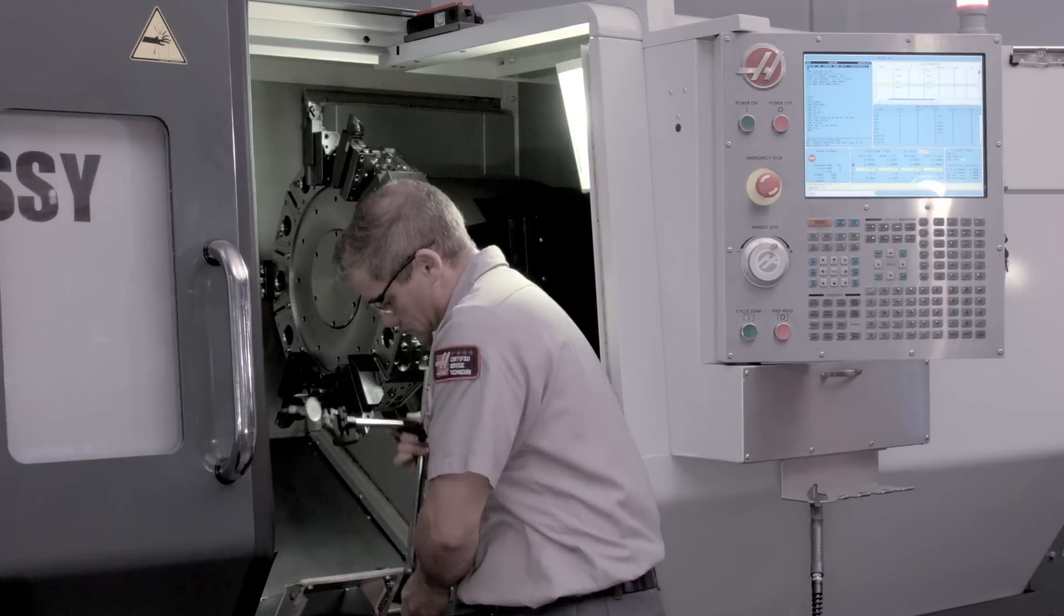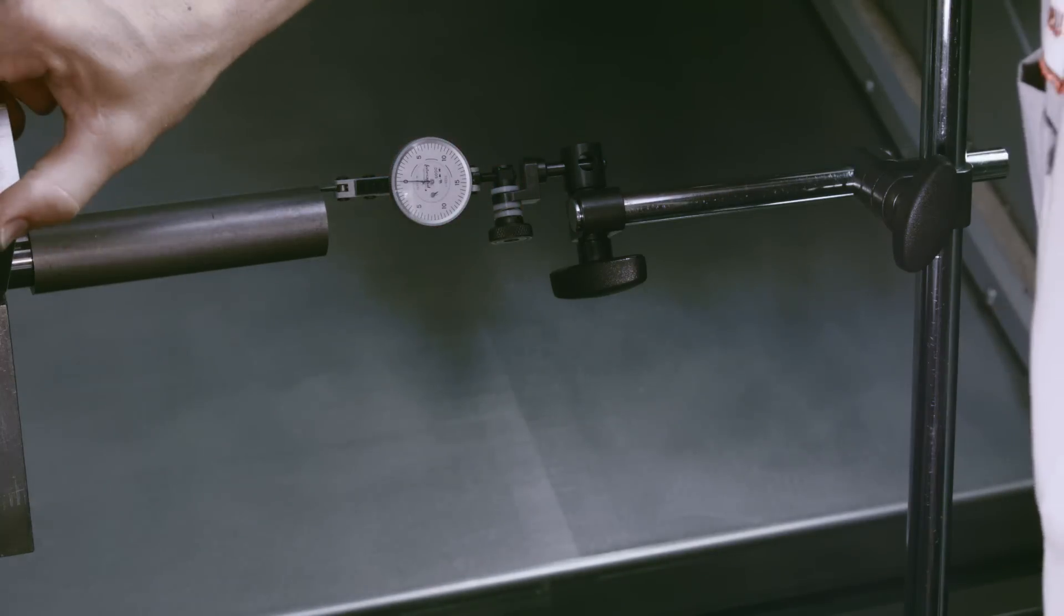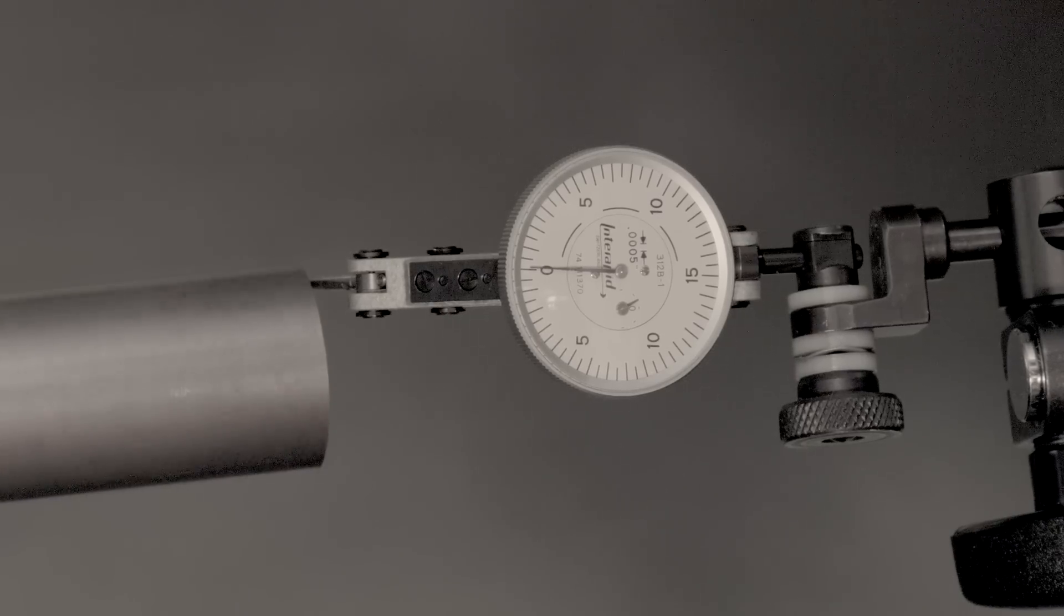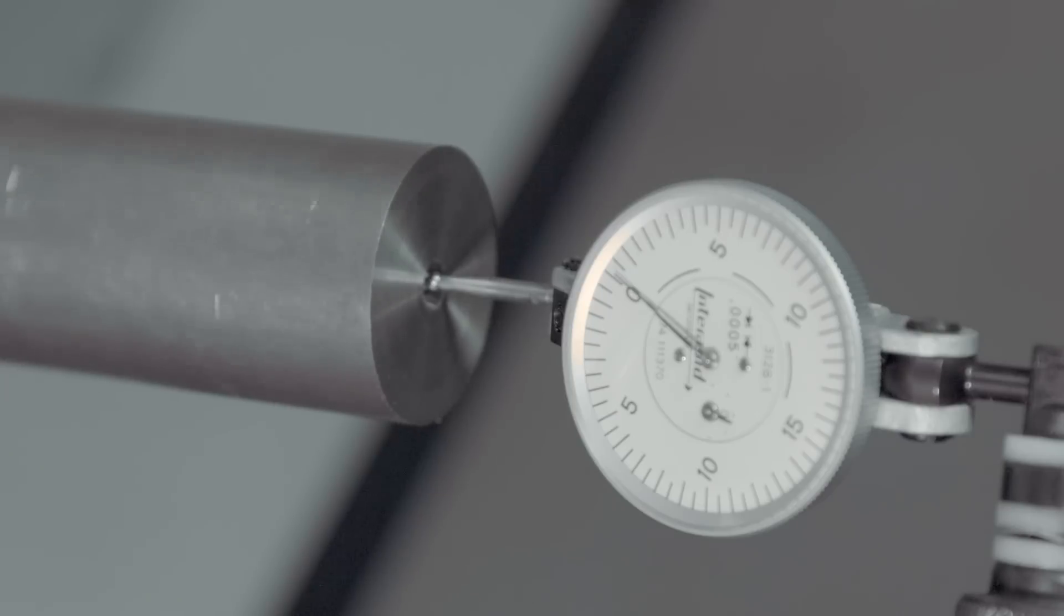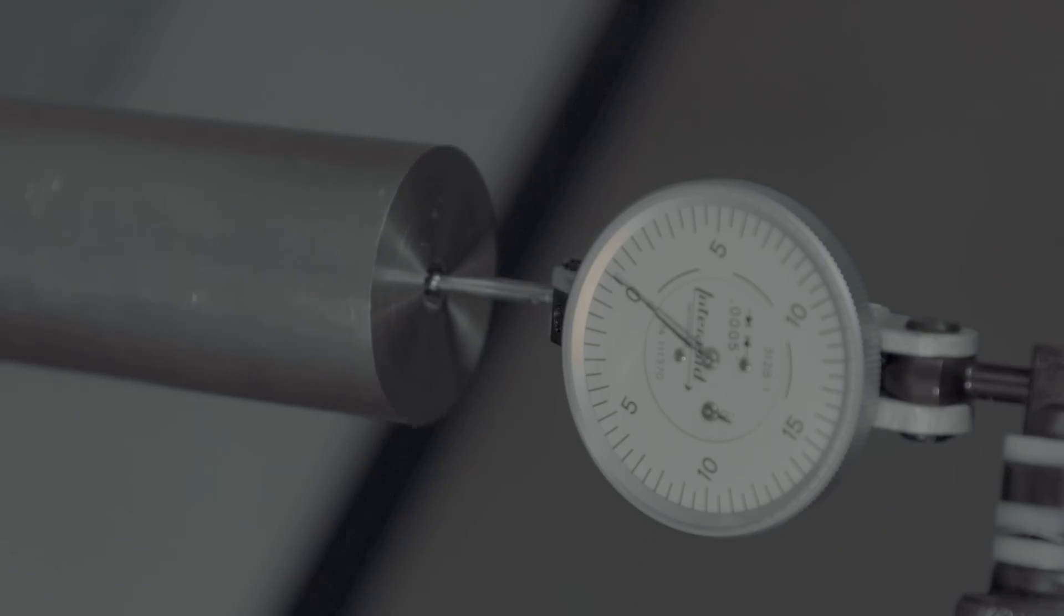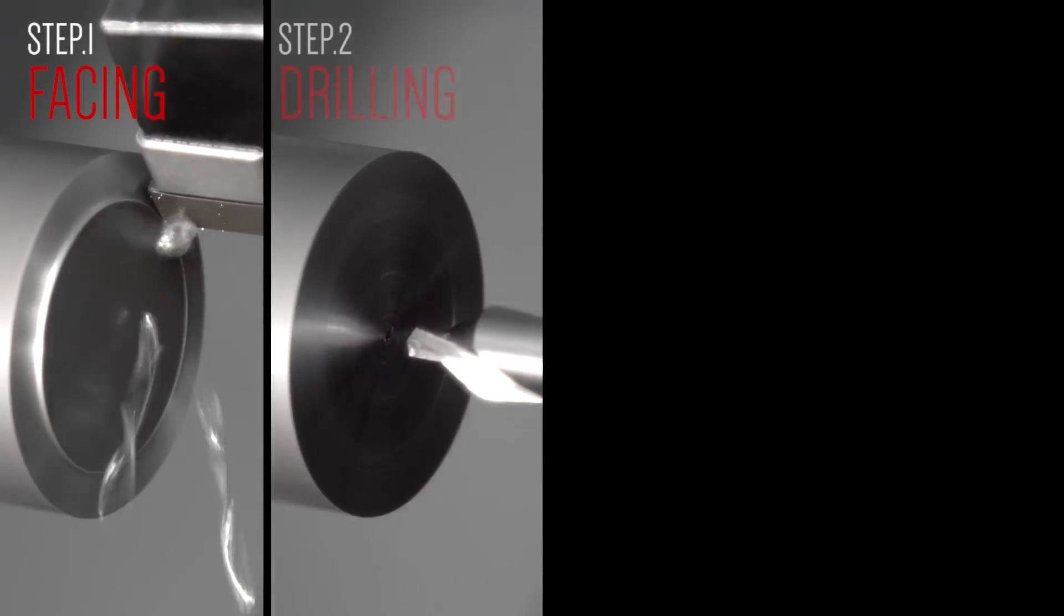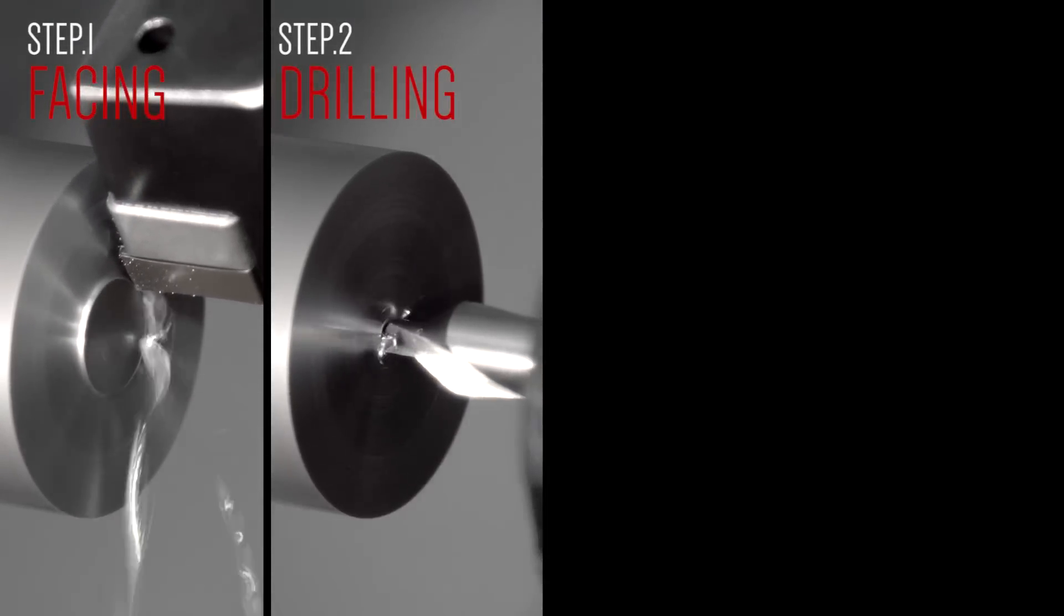With the facing and drilling complete, let's check our part. Both the face we just turned and the center drilled hole have very low run out. Great! Okay, so we just saw the part get faced off and center drilled. These operations start off our program.